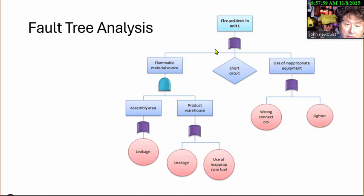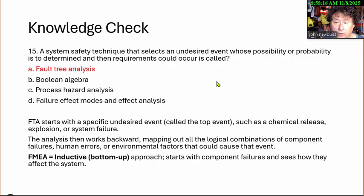This is going to be what they call fault tree. Could we have a fire in the accident in unit one? Yes, we have flammable material source. We could have a short circuit, inappropriate use of equipment like grinders without a hot works program. And this could be a whole setup of what you could say as an analysis of what could cause these issues. So it is the fault tree analysis called the top event, chemical release, system failure, then works backwards, mapping it down.